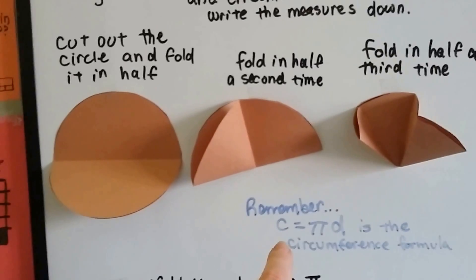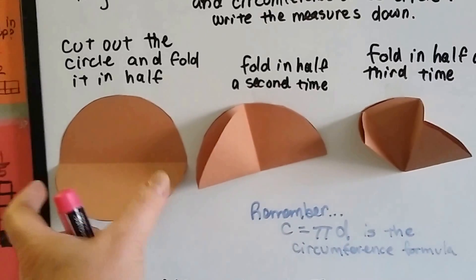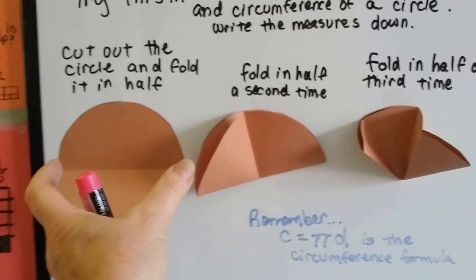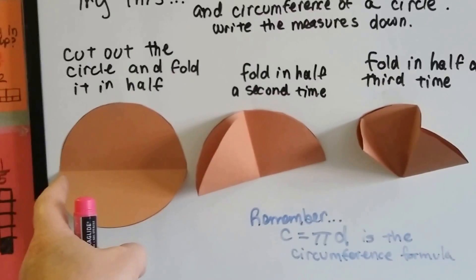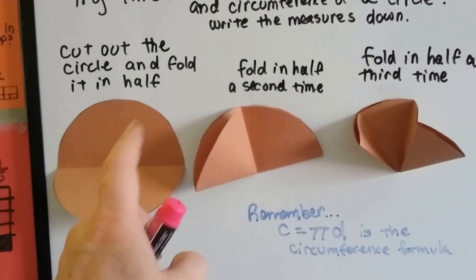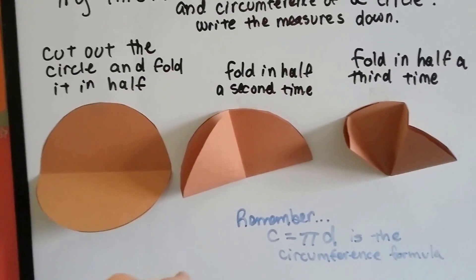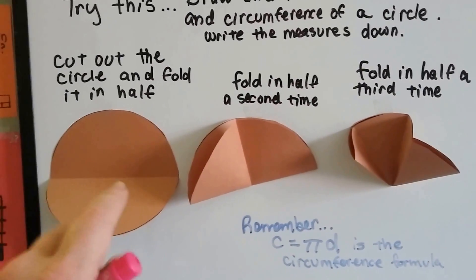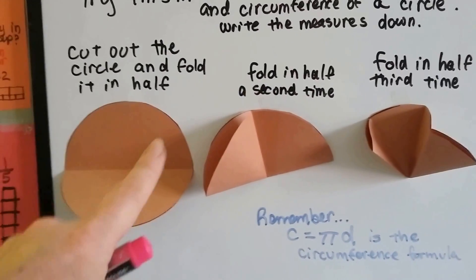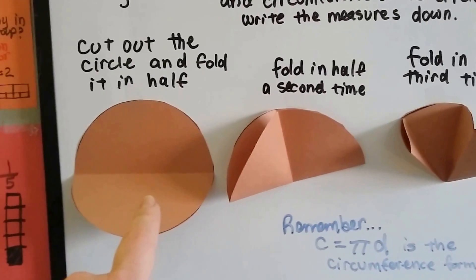And measure the circumference. Remember that the circumference is pi times the diameter. So you can double the radius to get the diameter or just measure straight across. Then multiply it by pi, 3.14, and you'll know what the circumference is. And then write all that down. Write what the diameter is, what the radius is and what the circumference all the way around is once you multiply it by 3.14.